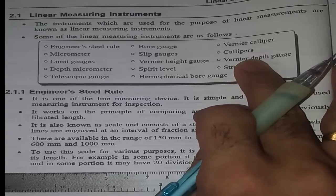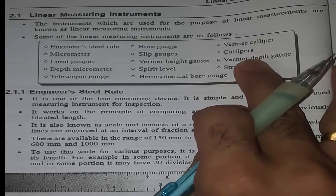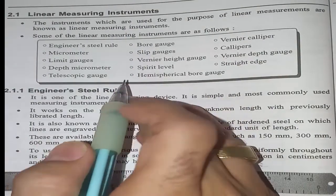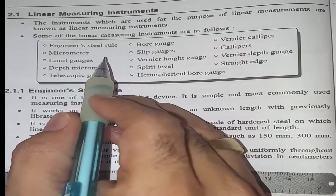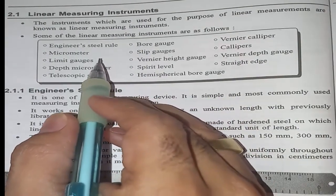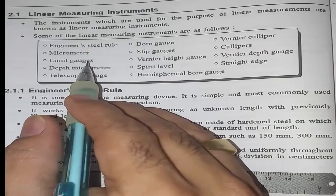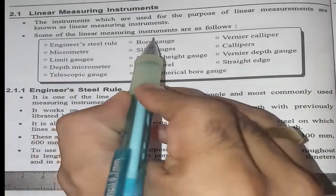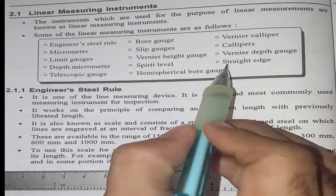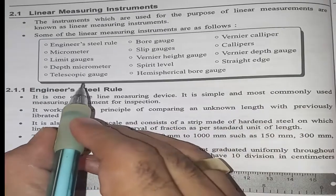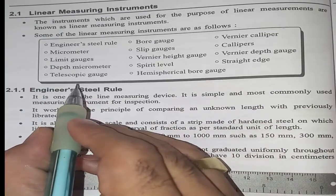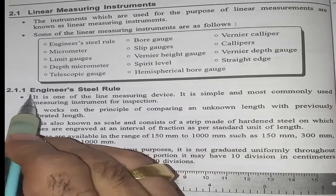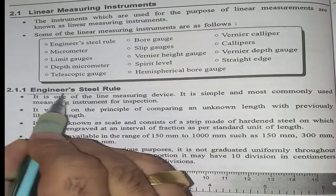Hello friends, welcome to Magnetitech YouTube channel. Today we are going to start a new chapter — linear and angular measurement. This is the first part of Chapter 2: linear measurement. Here are the instruments through which we can measure linear measurement. The first one is the engineering steel rule, which is the most common instrument we use.